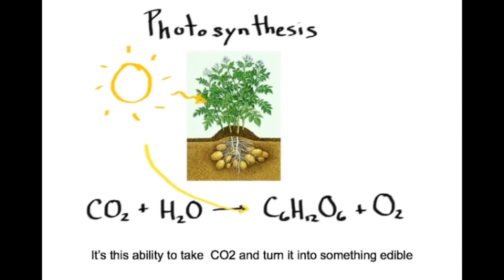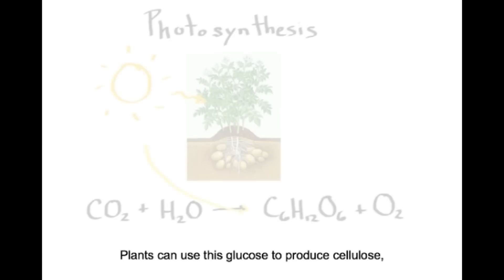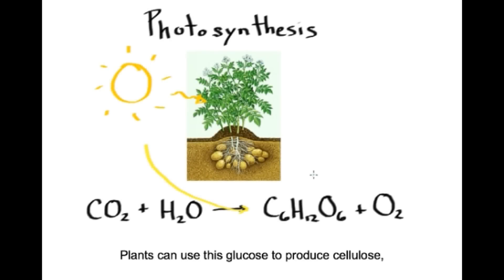It's this ability to take CO2 and turn it into something edible that allows life to exist on Earth. Directly or indirectly, everything you eat depends on photosynthesis. Plants can use this glucose to produce cellulose, which it uses to make leaves and other structures. Or it can use it to make starch, the plant's form of stored energy, which also happens to be a good source of energy for us.